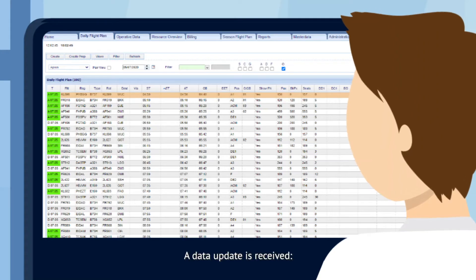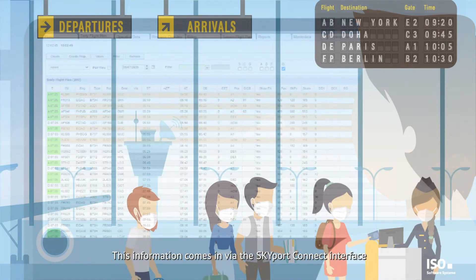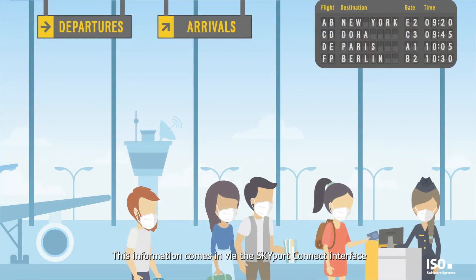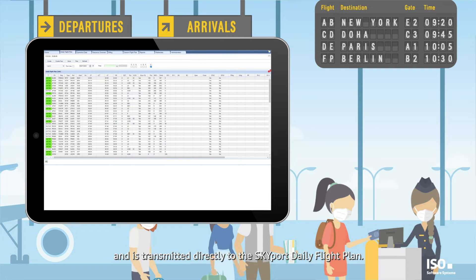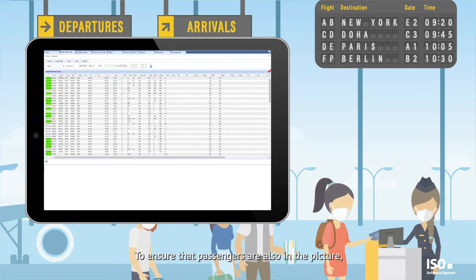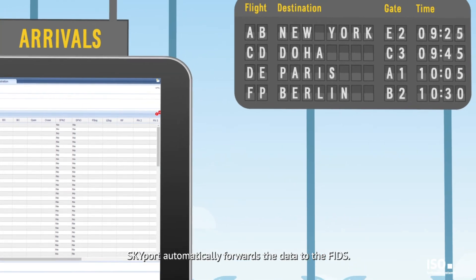A data update is received. The estimated time of arrival for a flight is now known. This information comes in via the Skyport Connect interface and is transmitted directly to the Skyport daily flight plan. To ensure that passengers are also in the picture, Skyport automatically forwards the data to the FIDS.